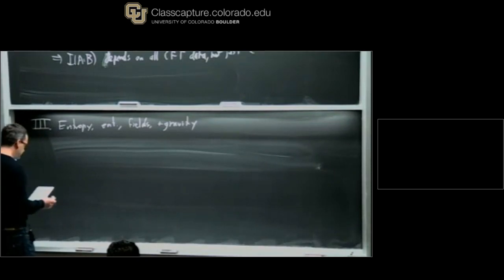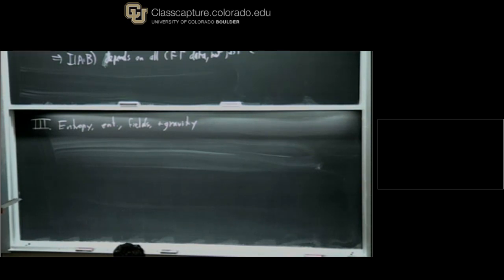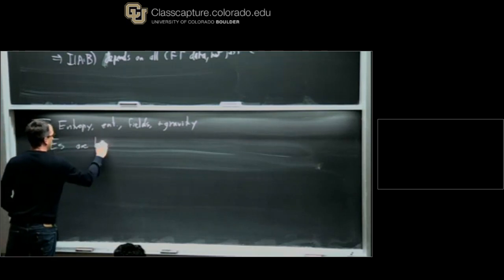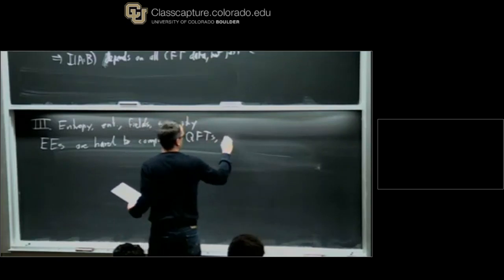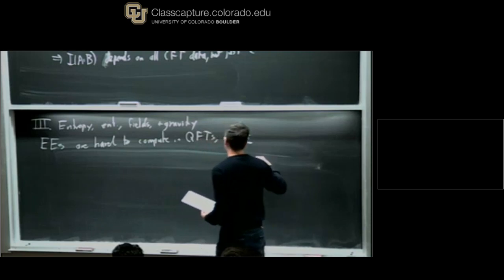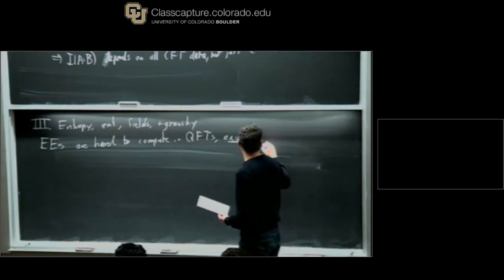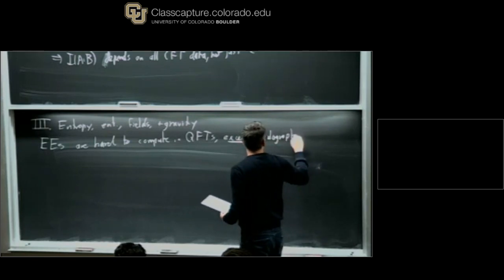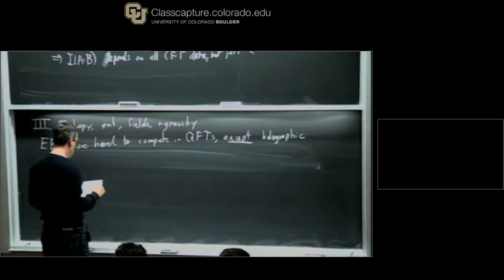It's very hard to compute entanglement entropies in field theories — except, strangely enough, in ones that have a lot of degrees of freedom and are at strong coupling, and in particular if they have a holographic description. Like so many things, as Oliver has emphasized in his lectures, it becomes suddenly tractable because it turns into a classical problem. This was a great discovery by Ryu and Takayanagi, and I'm going to try to motivate it by talking about the thermofield double of a thermal state.